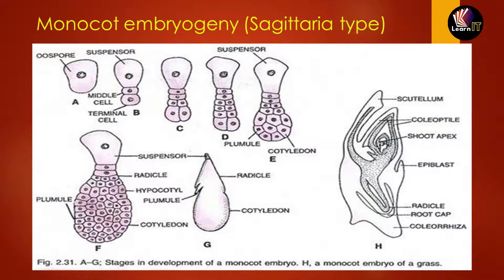The main cell, known as the zygote or oosphere, undergoes a transverse division to produce a suspensor cell facing the micropylar end, and an embryo cell facing the other side. The embryo cell undergoes another transverse division to form a terminal cell and a middle cell. The terminal cell then undergoes both vertical and transverse divisions to form a globular embryo.